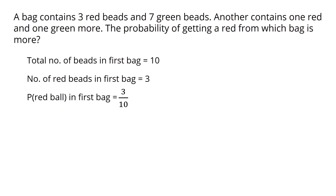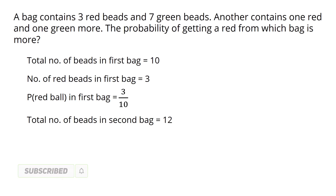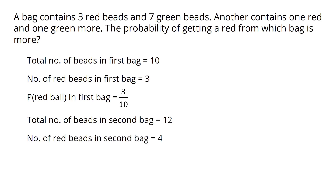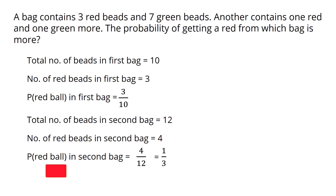Now the second bag — we will consider this. The second bag has 4 plus 8, that is total 12 beads. The number of red beads in the second bag is 4. So the probability is 4 by 12. We have to simplify it further — it simplifies to 1 by 3.